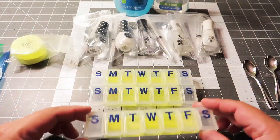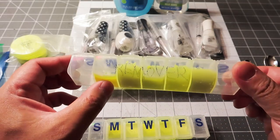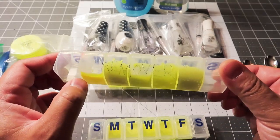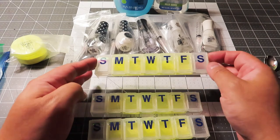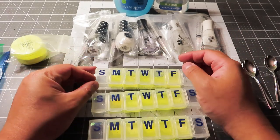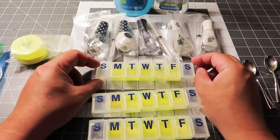It says control right here, so this is the control. This is the remover, and this is the sanitizer. The markers don't hold up very well for some reason.